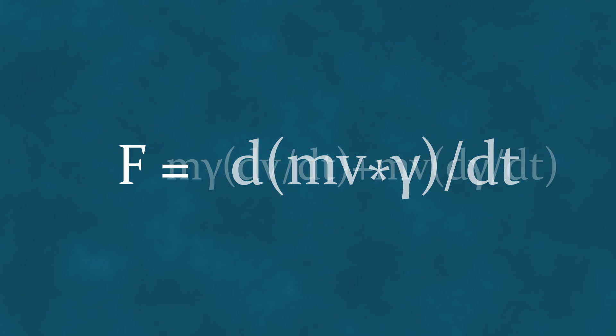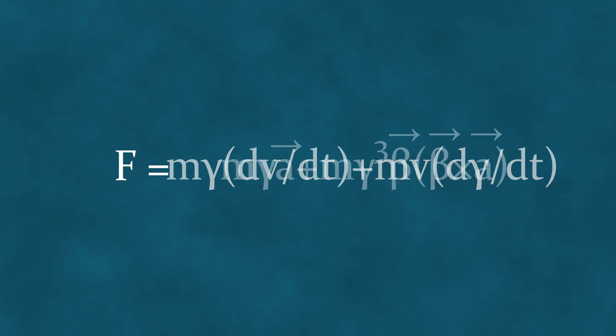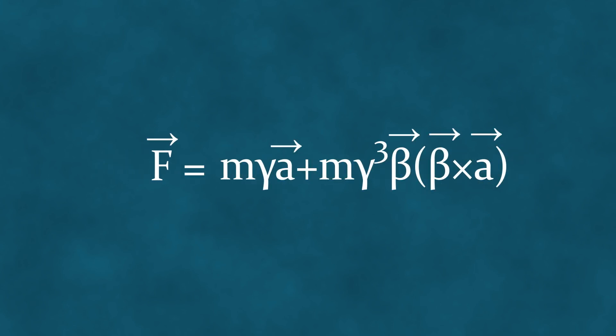That is, first write it in this form, and then after a series of transformations, like this. What we have obtained is essentially Newton's second law in its relativistic form. Again, it is not difficult to see that at low speeds, when the magnitude of beta is approximately zero and gamma is approximately one, it reduces to the classical form of Newton's second law.